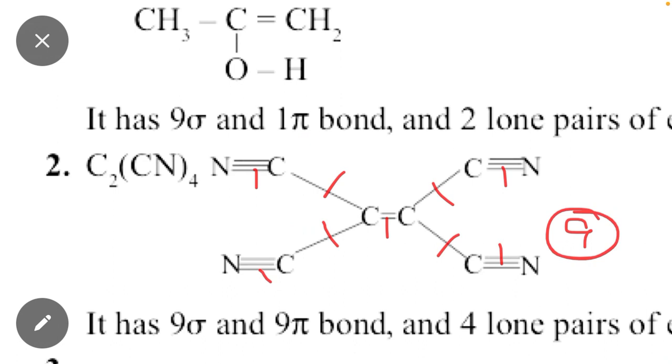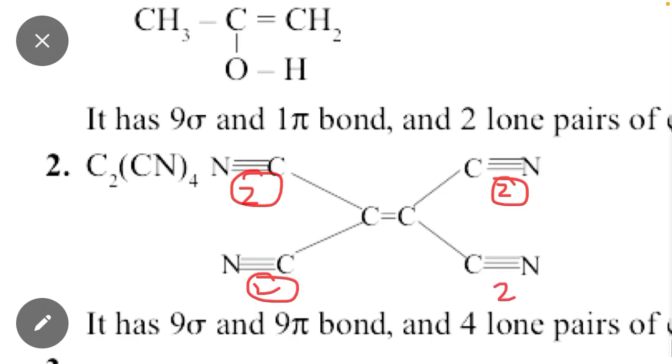Here are 4 triple bonds mean 2 pi bonds are present here, 2 are present here, 2 pi bonds are present here, 2 pi bonds present here, 8 and 1 pi bond present here. Mean total 9 pi bonds are present.